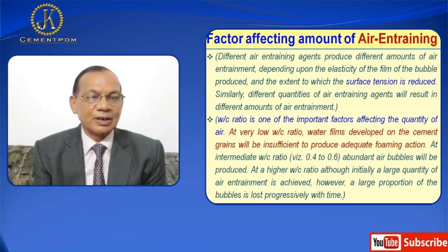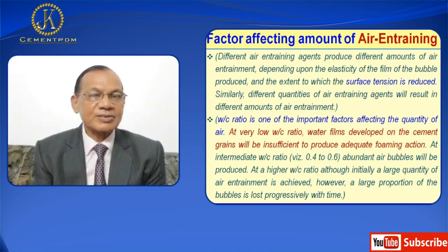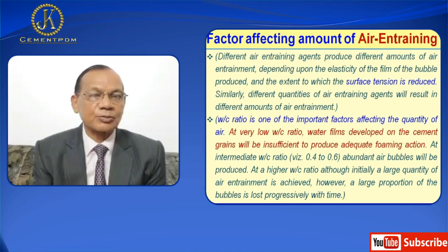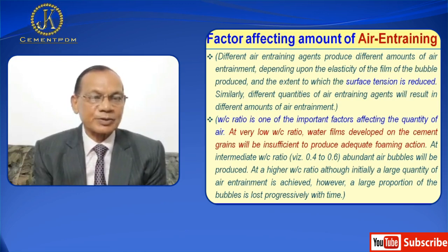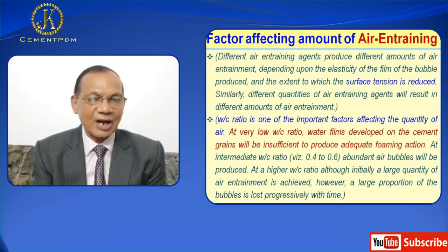Water-cement ratio is one of the important factors affecting the quantity of air. At very low water-cement ratios, water films developed on the cement grains will be insufficient to produce adequate foaming action. At intermediate water-cement ratios, between 0.4 to 0.6, abundant air bubbles will be produced. At higher water-cement ratios, although initially a large quantity of air entrainment is achieved, a large proportion of the bubbles are lost over time.